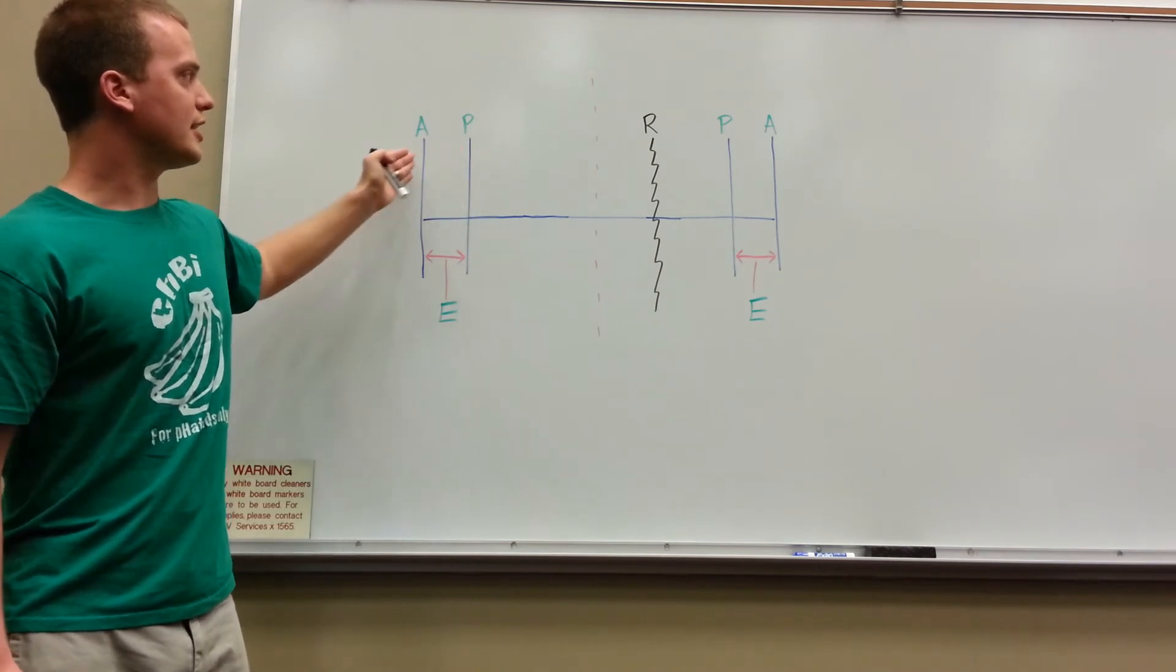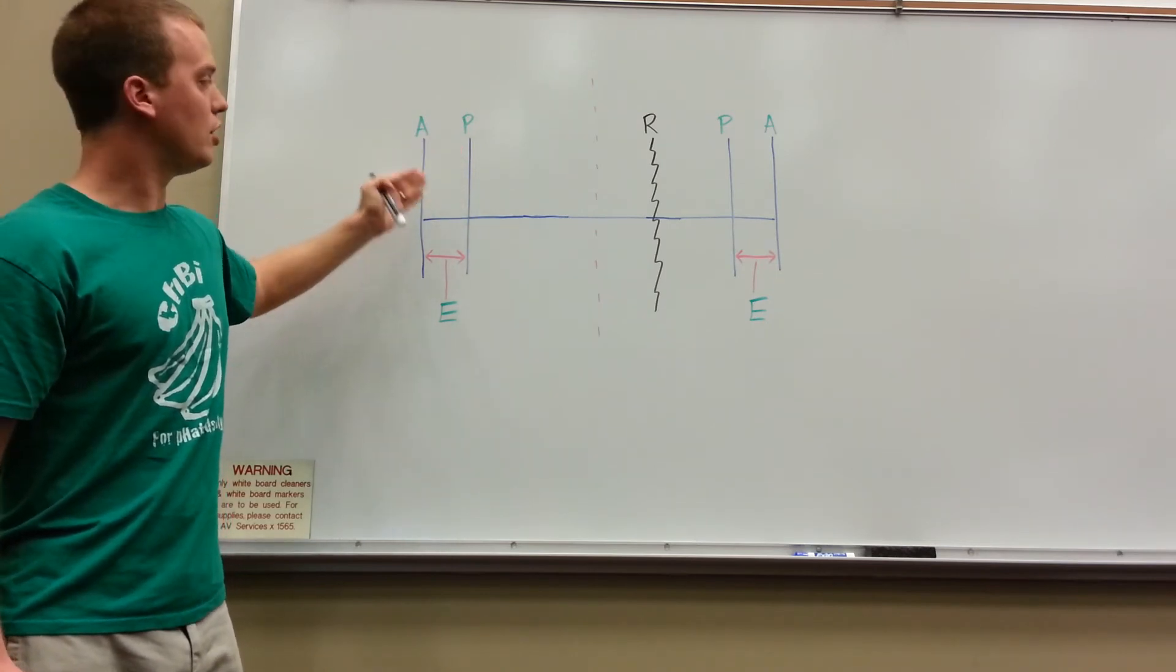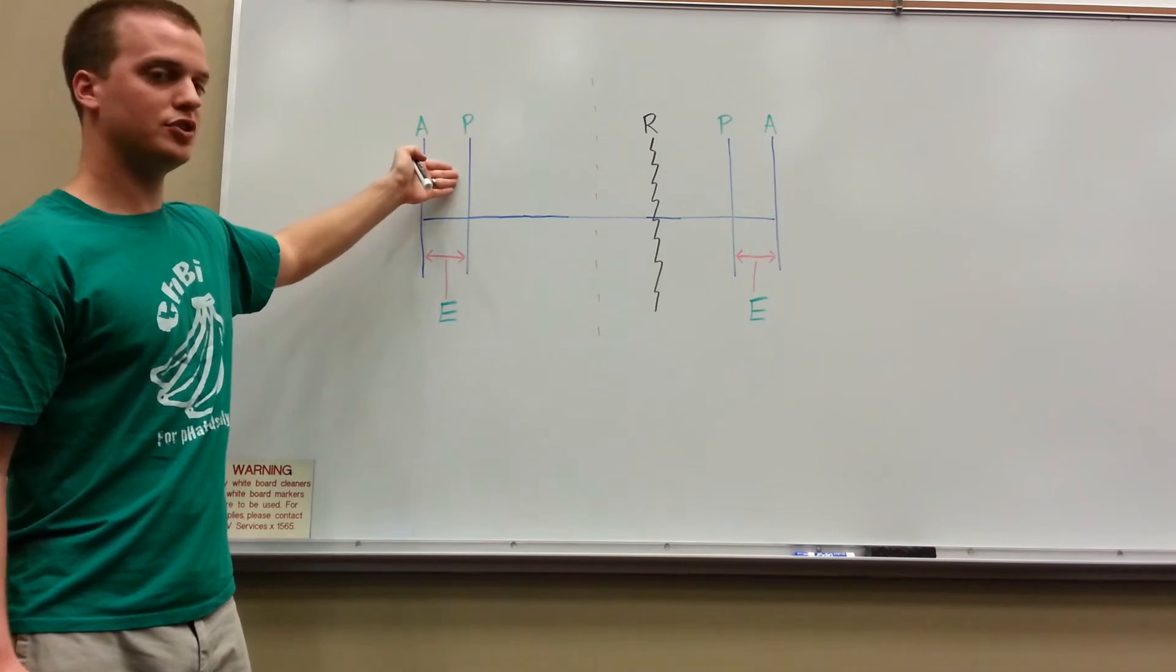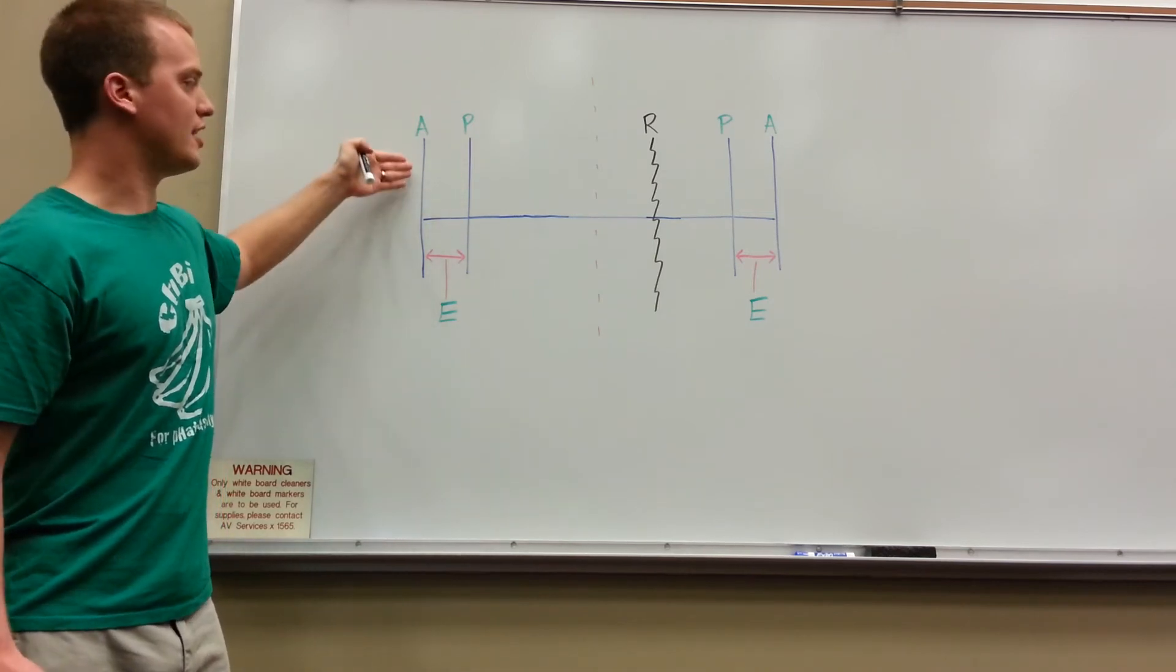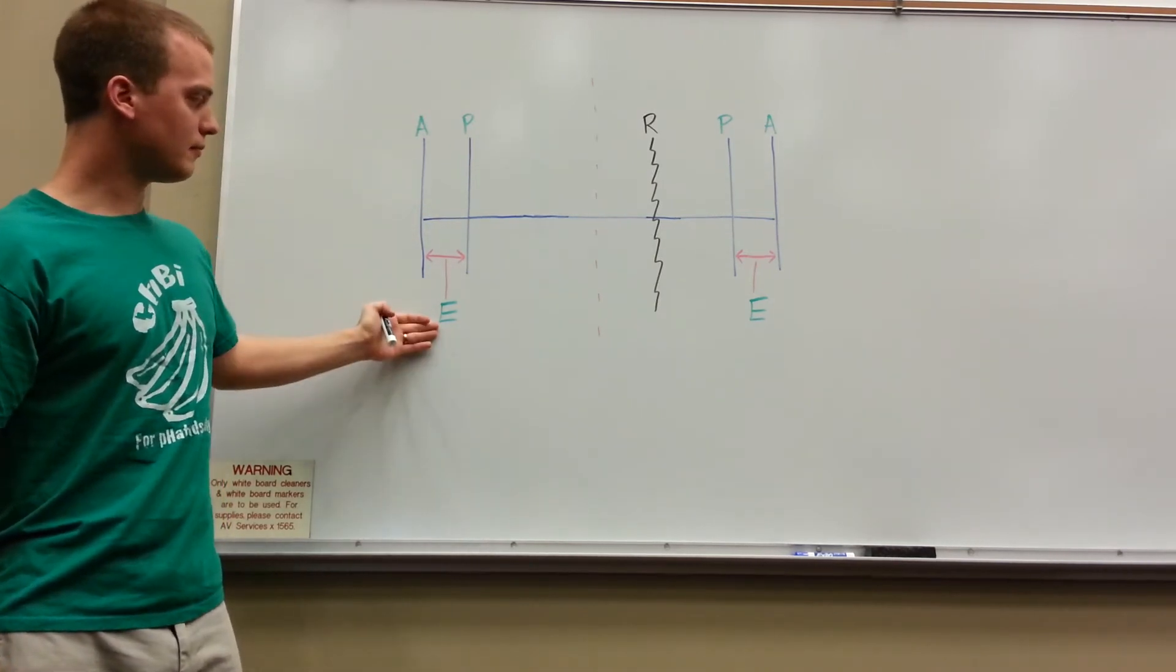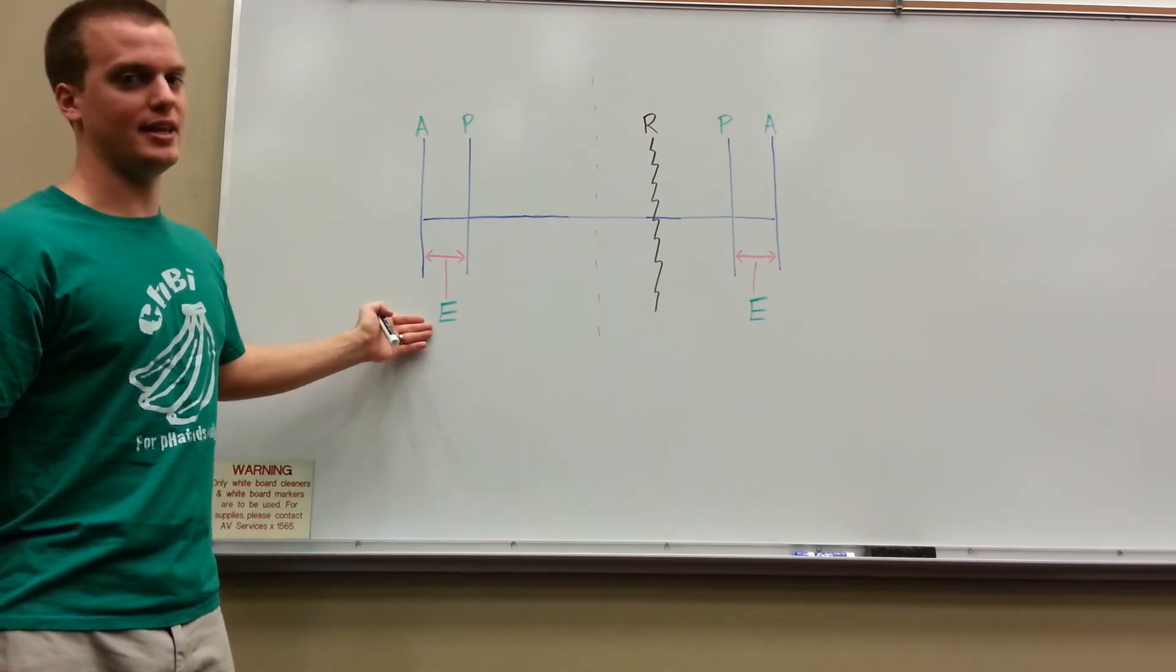The distance between the physiologic and anatomical barrier, or the distance between the end of active motion and the end of passive motion, is known as the elastic barrier, denoted here by E.